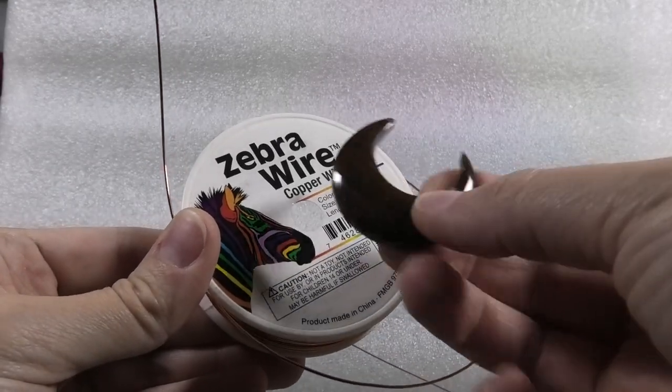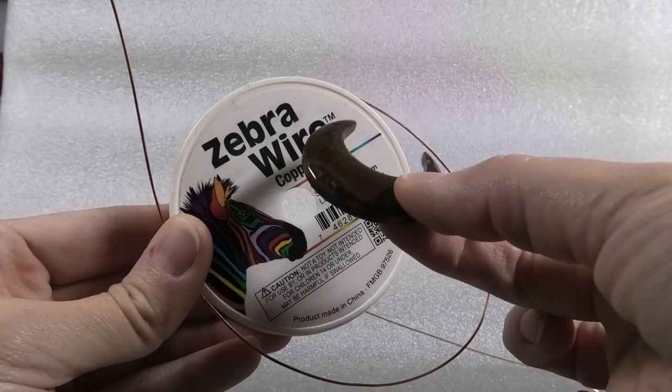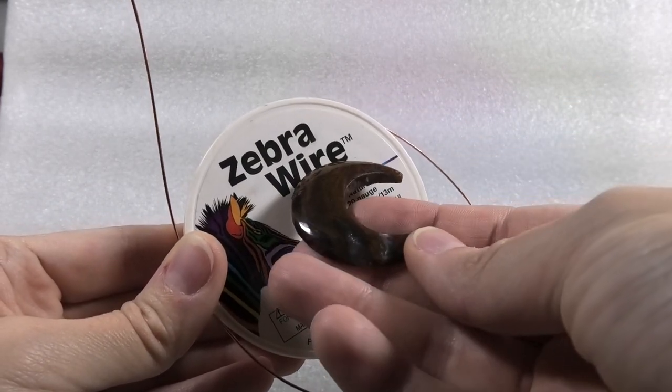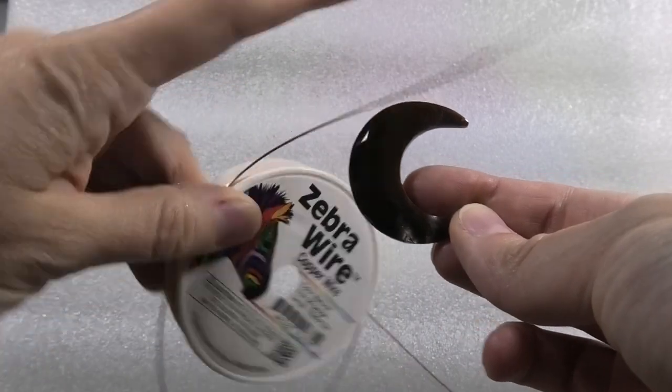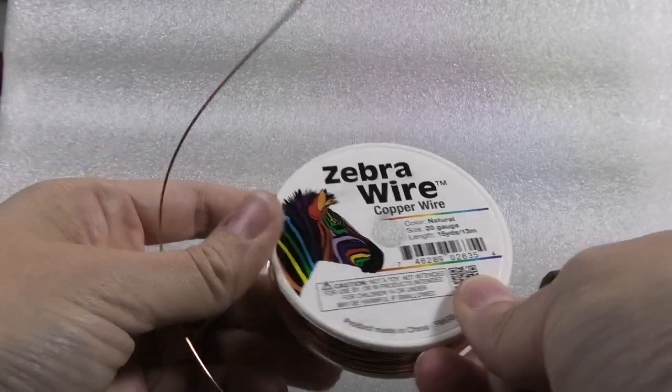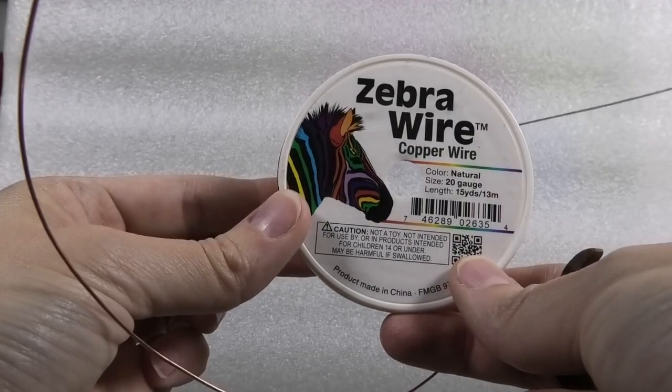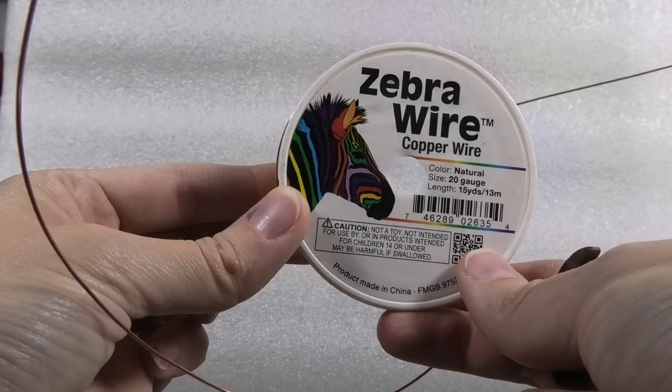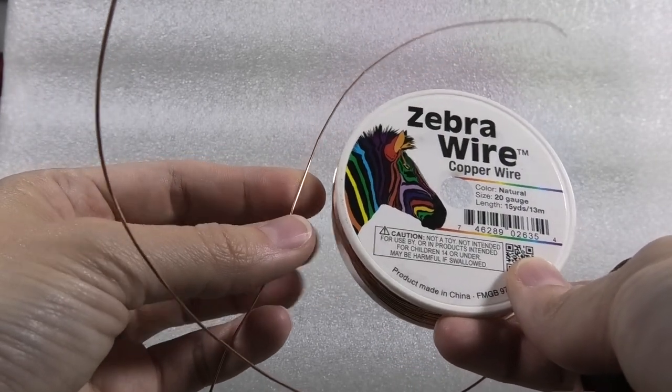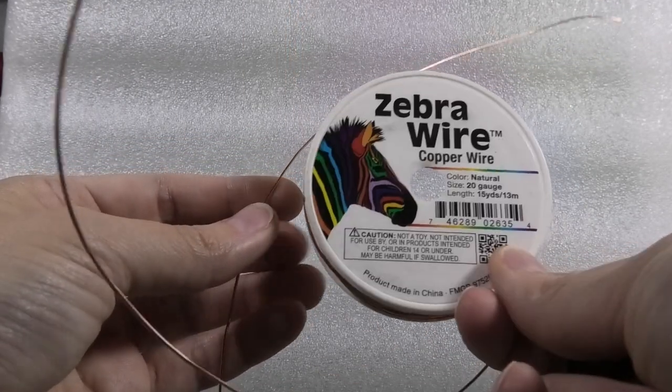Alright, so the things you will need is a crescent moon shaped stone and mine is one and a half inches tall if I measure it this way. And then some wire. I cut myself a piece of 19 inches. This is 20 gauge wire. This is enameled copper wire. This one I think is just the natural copper color. It's just been coated with like a clear coating so it stays this color. It doesn't tarnish.